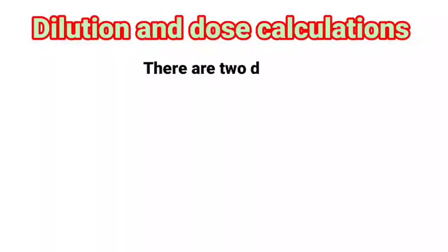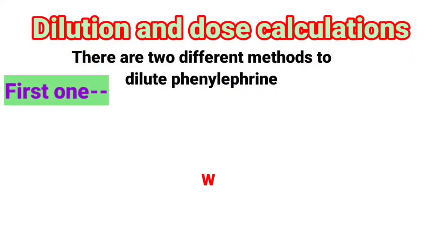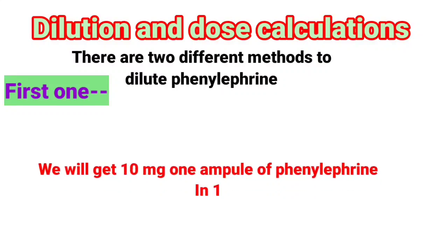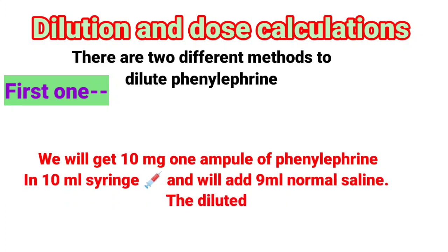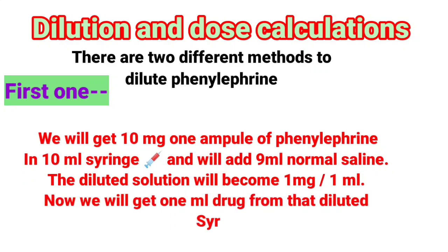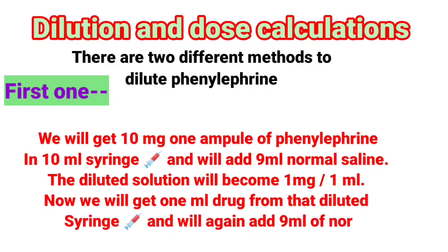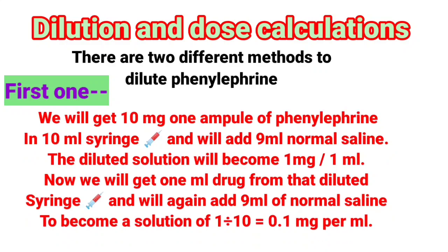Dilution and dose calculations. There are two different methods to dilute Phenylephrine. First method: take 10 mg from one ampoule of Phenylephrine in a 10 ml syringe and add 9 ml normal saline. The diluted solution becomes 1 mg per 1 ml. Then take 1 ml from that diluted syringe and add 9 ml of normal saline to get a solution of 0.1 mg per ml.